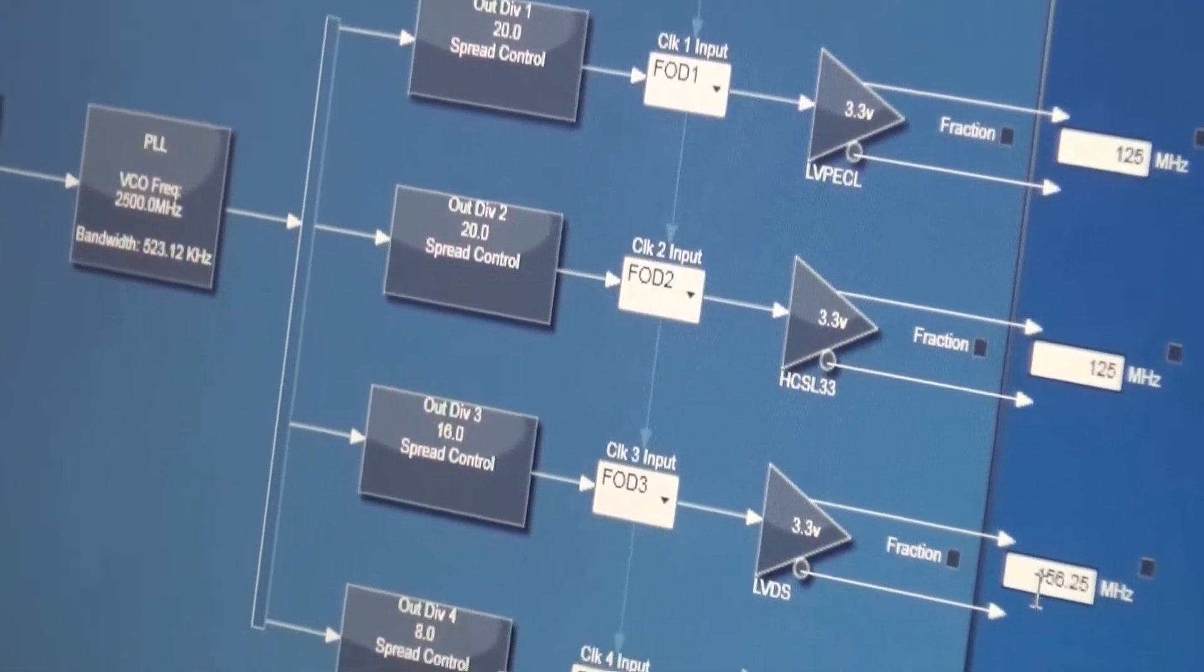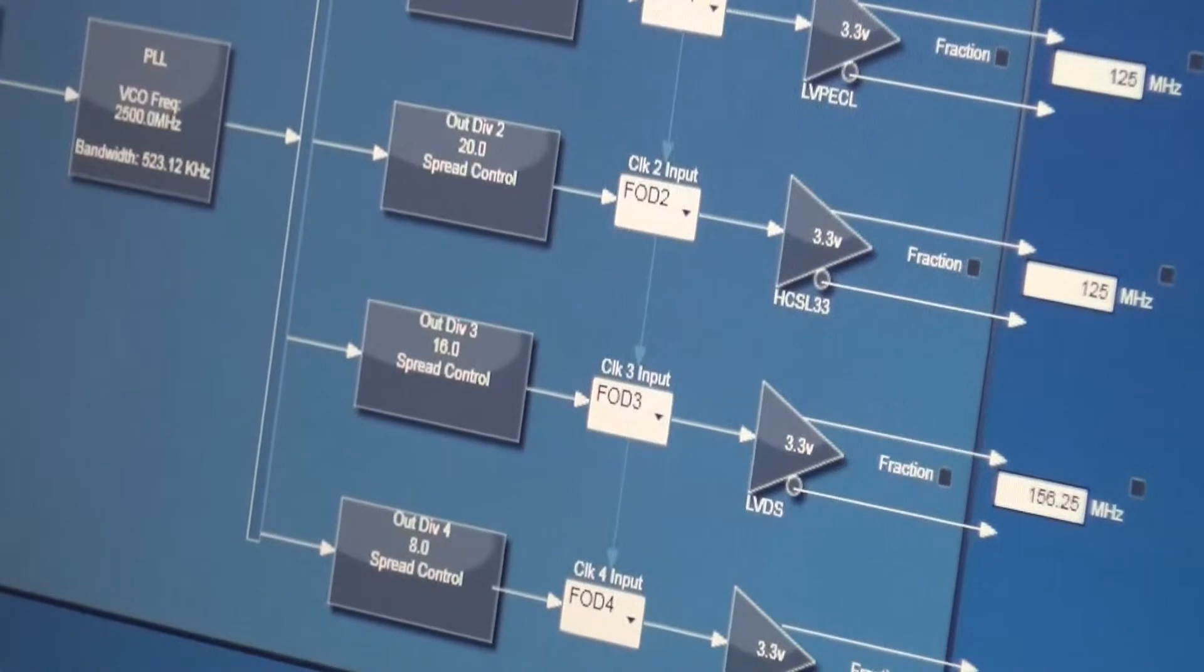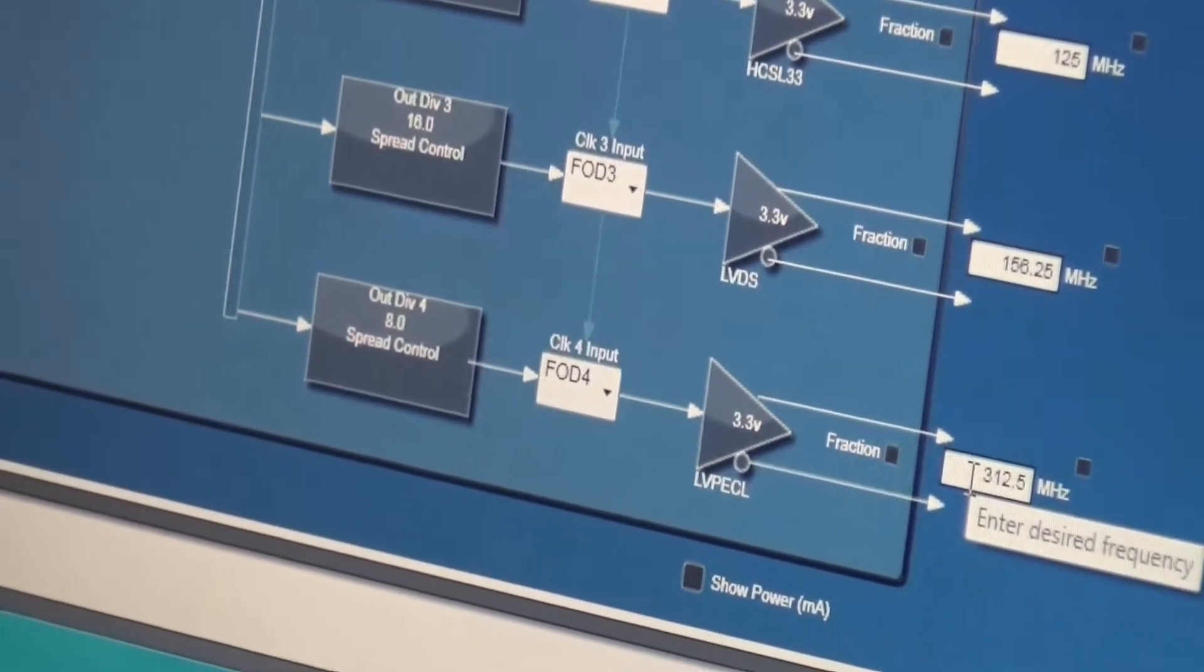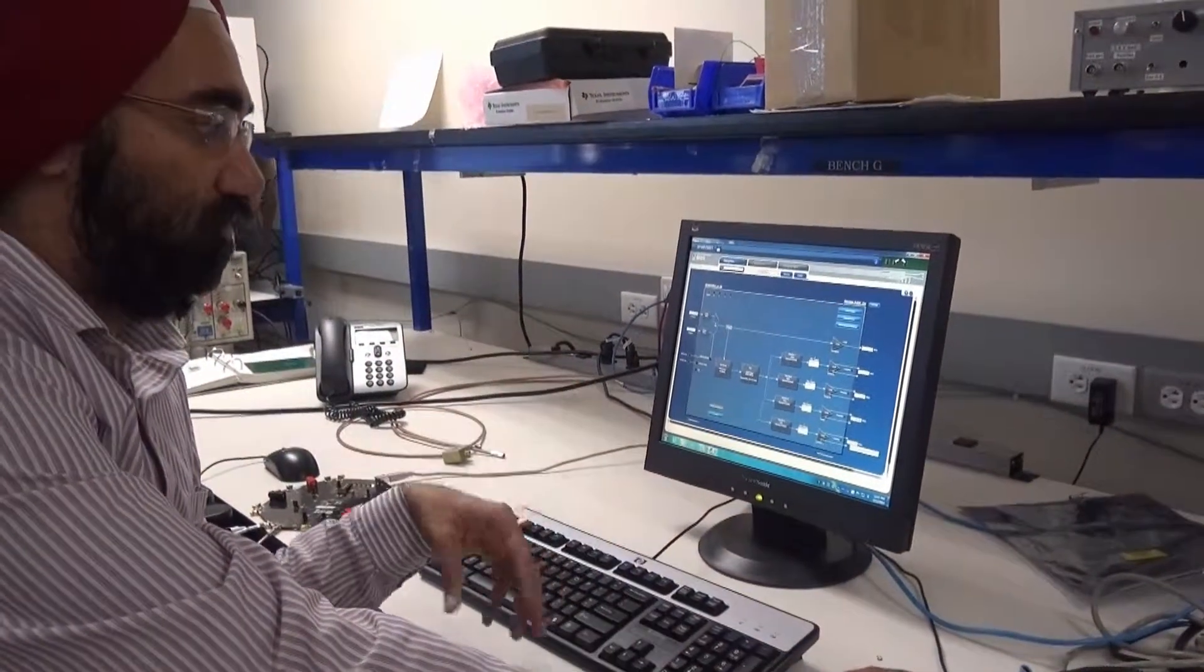Output 3, I have it configured at 156.25 megahertz LVDS and output 4 has 312.5 megahertz. All the outputs are operational and have different output frequencies.